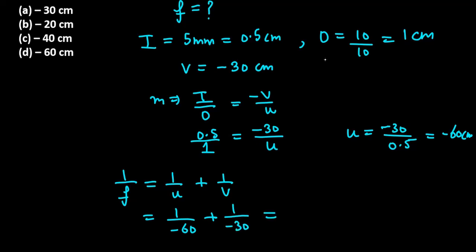Now taking LCM, you will get 60. Multiplying the first value with 1 because it is 60 already, multiplying the second with 2, it will give you minus 1 and minus 2 as the numerator. You will get minus 3 over 60, which is minus 1 over 20. And it equals 1 over F. So F's value is minus 20 cm.